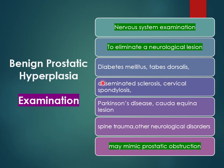Examination of the neurological system is of utmost importance because neurological problems can mimic prostatic obstruction. These include diabetes mellitus, tabes dorsalis, disseminated sclerosis, cervical spondylosis, Parkinson's disease, cauda equina lesions, and of particular importance, spinal trauma and other neurological disorders.